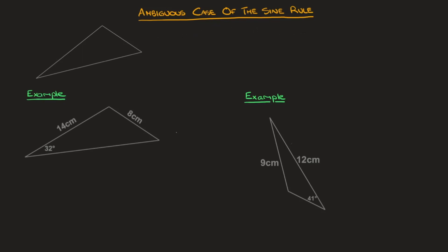The ambiguous case of the sine rule refers to a situation we may be faced with when looking for an unknown angle in a triangle. We'll encounter it when the information we have is the side length opposite the angle we're trying to find, as well as an acute angle and the side length opposite that acute angle — and those three things make up all the information we have.